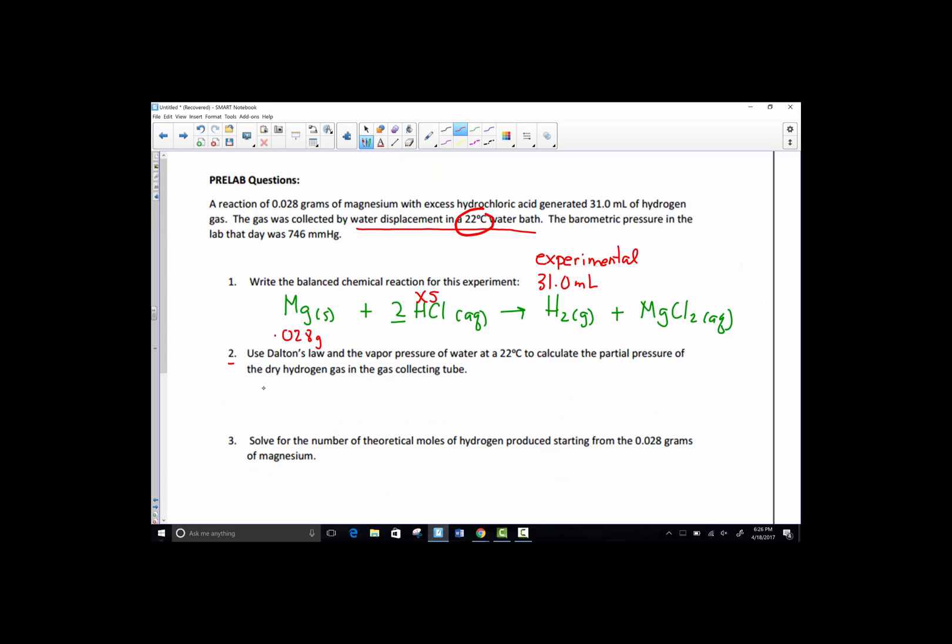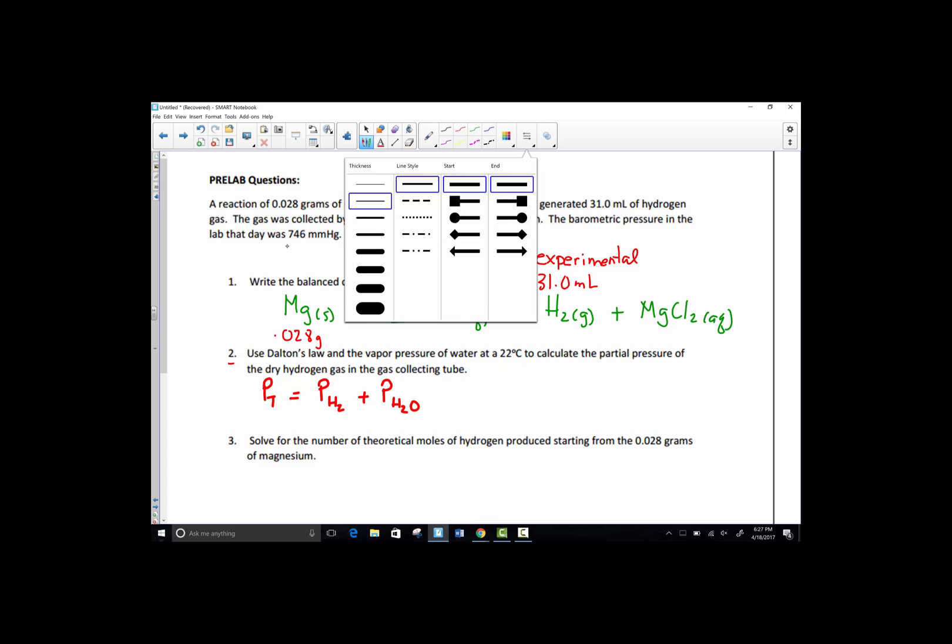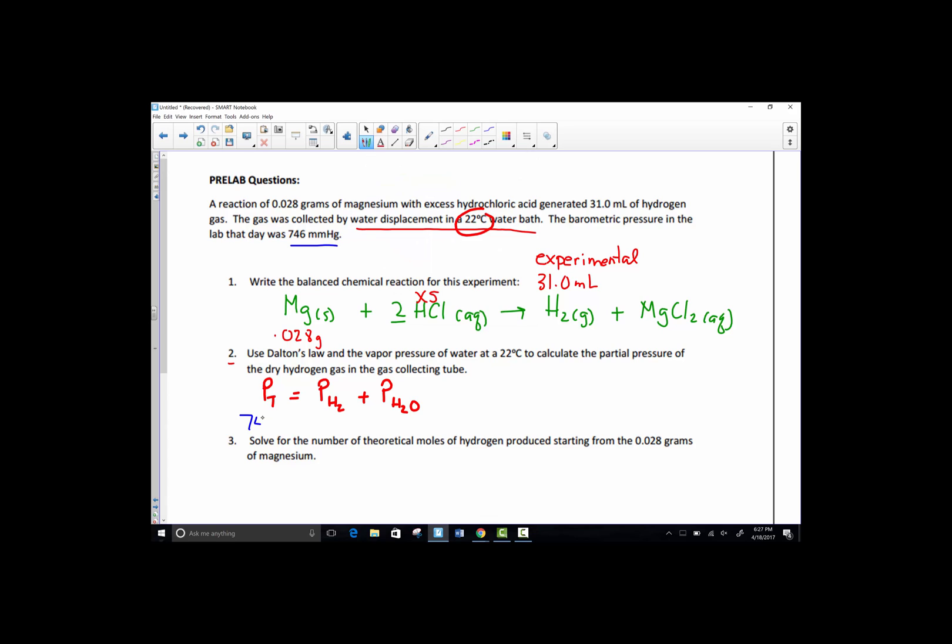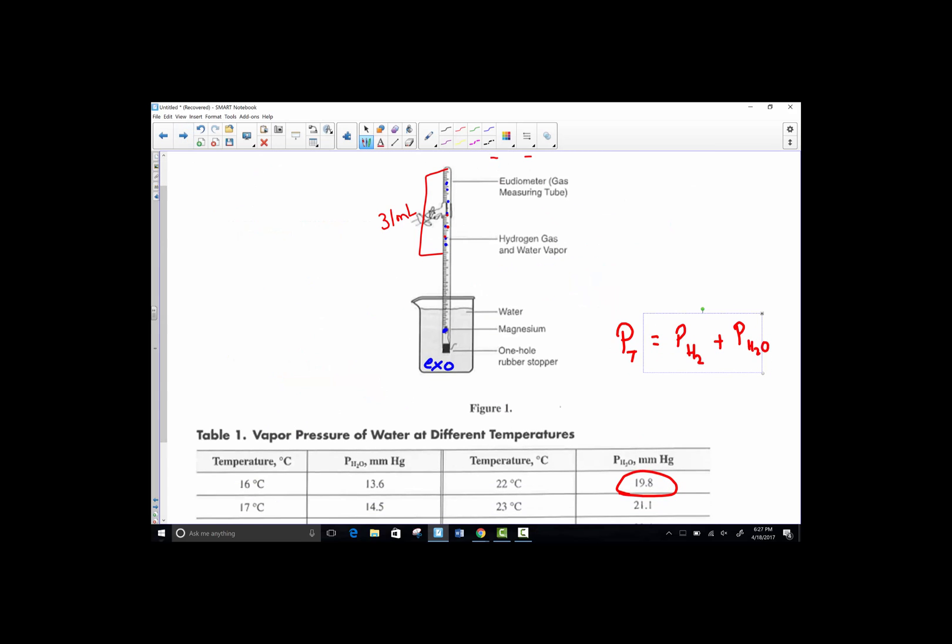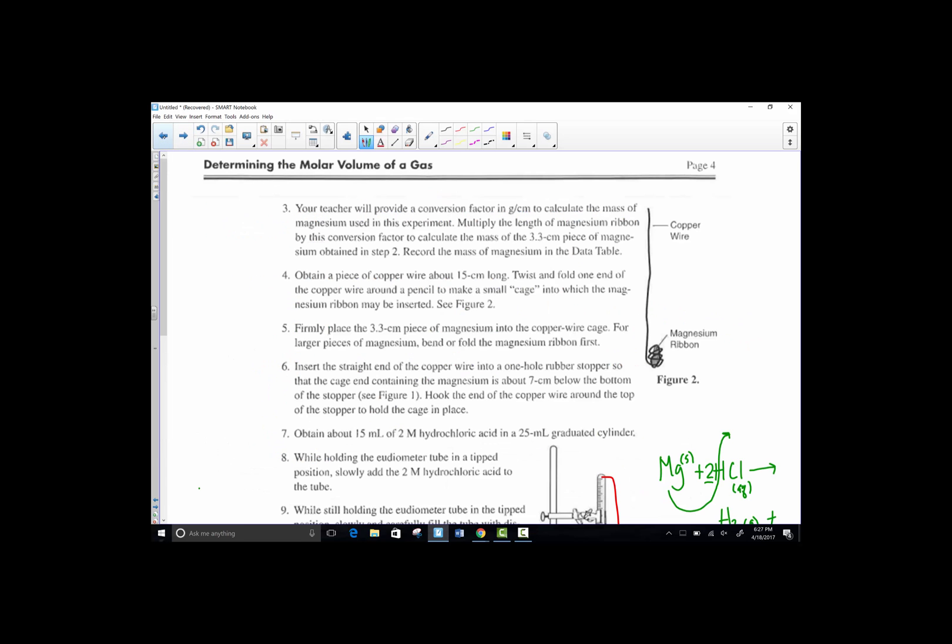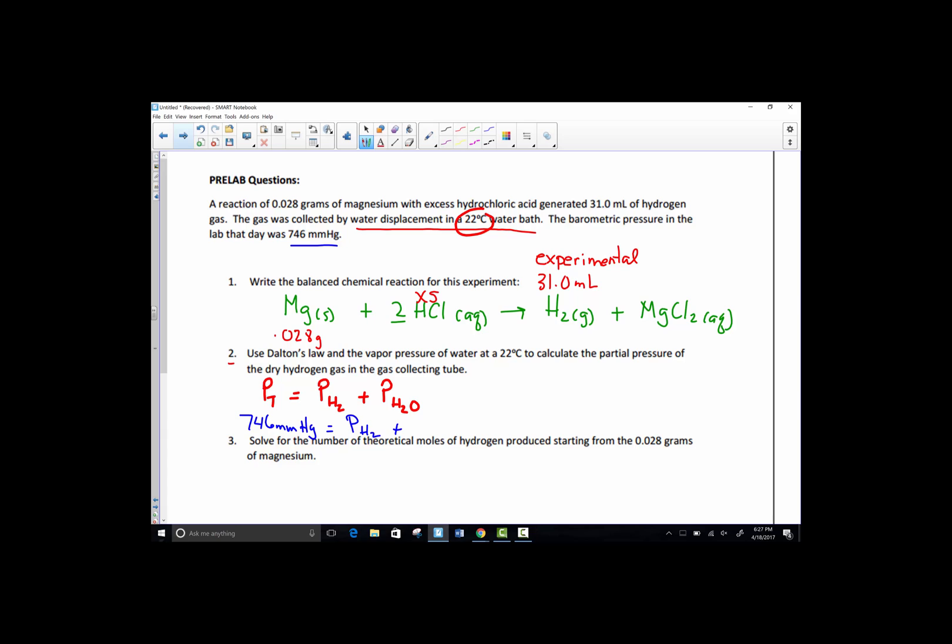That's the number we need to find to solve problem two. Dalton's Law reminds us that the total pressure is equal to the sum of all the individual partial pressures inside of that mixture. Well, we've learned that there's actually two contributions. The total pressure was 746 millimeters of mercury. We'd like to know the contribution of the hydrogen and the contribution for water, its partial pressure. We looked up and said it was 19.8 from our chart. That chart needs to be placed inside of your lab report as well so you have access to those values. Every time I move I forget what it was, 19.8 I believe, millimeters of mercury.